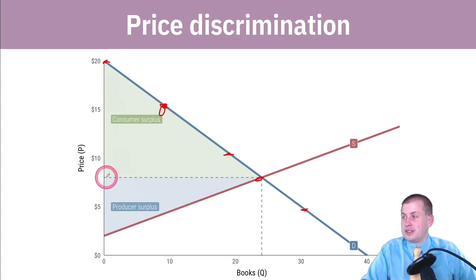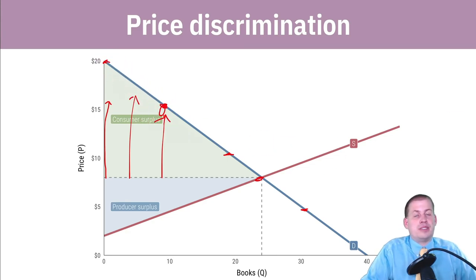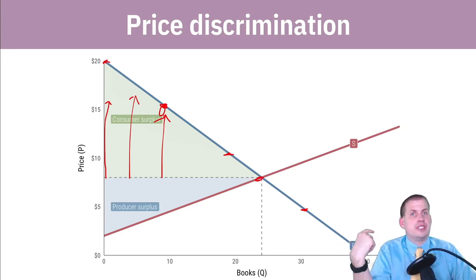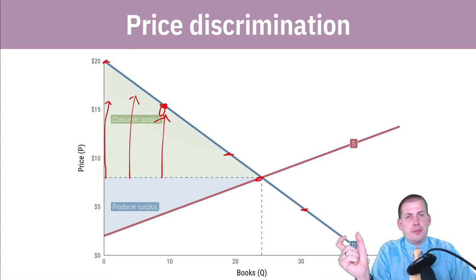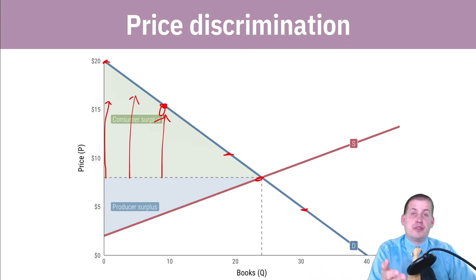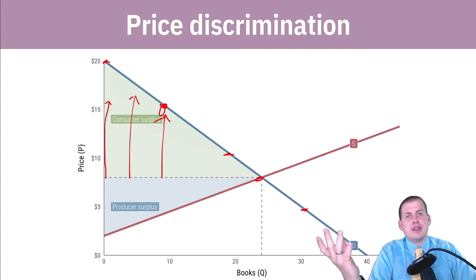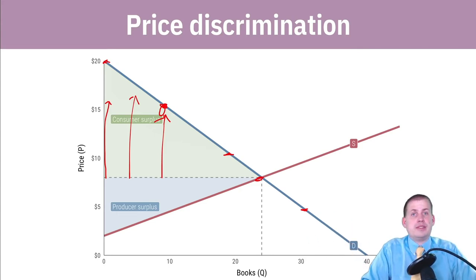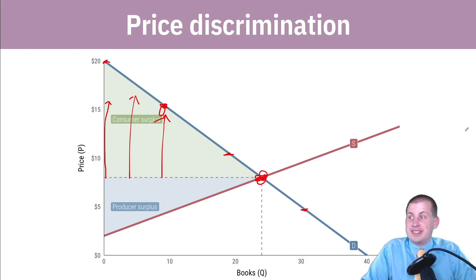Essentially, price discrimination lets the producer take the consumer surplus and push it all the way up to the producer. The producer gets all sorts of bonus points because they're selling to everybody at their exact willingness to pay. If you know someone is willing to spend $15 for a book, you sell it for $15. If another person is only willing to spend $5, you sell it for $5. If someone doesn't care about price at all, you sell it for $20. The only way this works is if you can read people's minds or guess their willingness — which is what airlines do by changing price depending on timing.